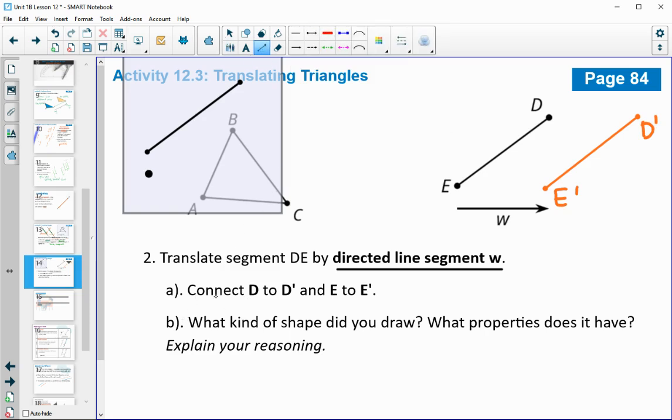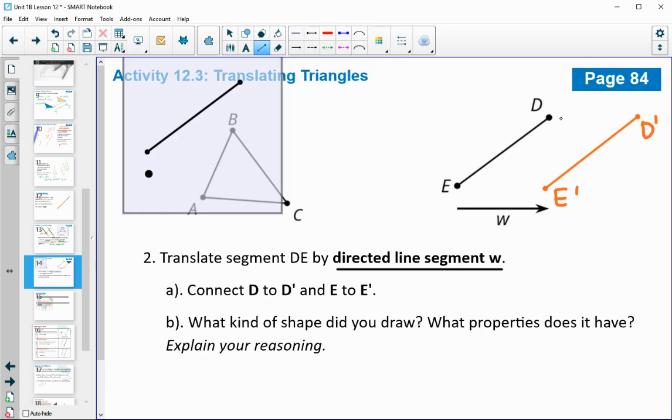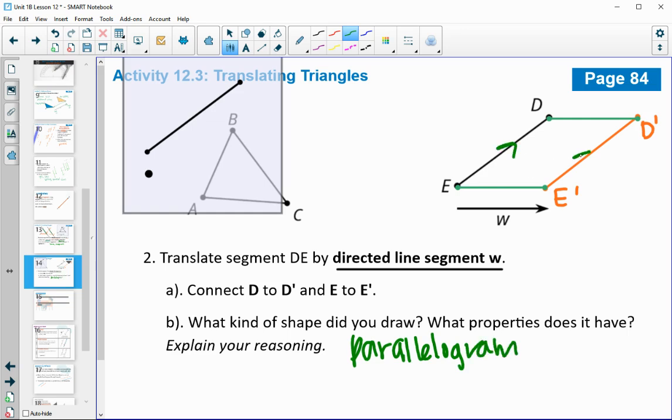And then it asks you to connect D to D prime. So this time asks you to connect D to D prime and E to E prime. And what shape does it look like you made? And then explain your reasoning. So it looks like we made a parallelogram. And because we did these translations, we talked about it looks like those two lines are parallel. And then also the image connected to the original. These line segments are parallel. So then we ended up with a parallelogram.